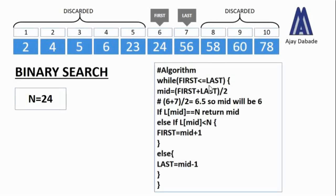The while loop runs again: first is 6, last is 7, so the condition is true. We calculate mid as 6 plus 7 divided by 2 = 6.5; we take the integer part, so mid is 6. The if statement checks l[6], which is 24, and this equals n which is 24. The condition is true, so we return the mid value — we have found the number and its position. This is how binary search works: we keep dividing the list by 2 until we find the number.